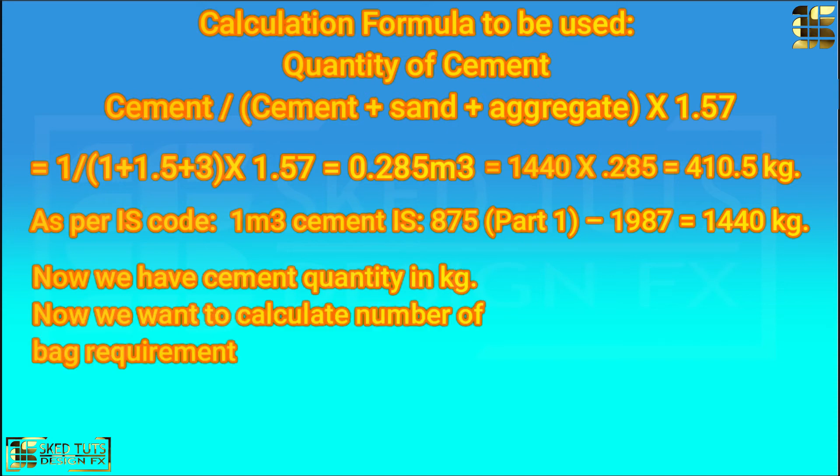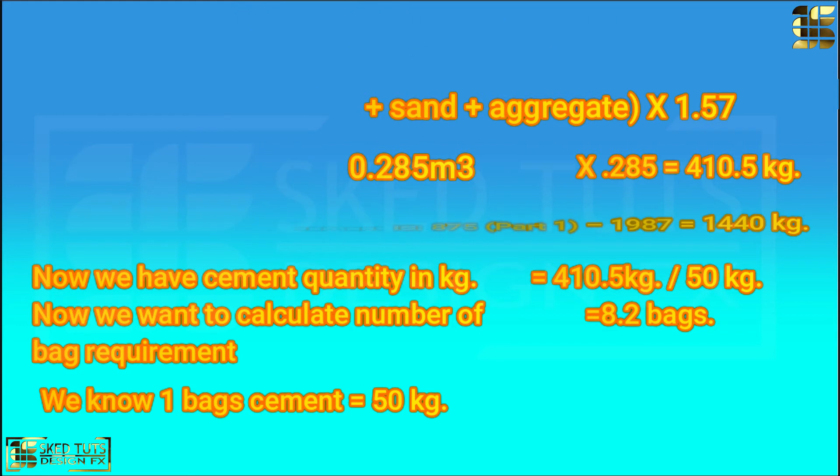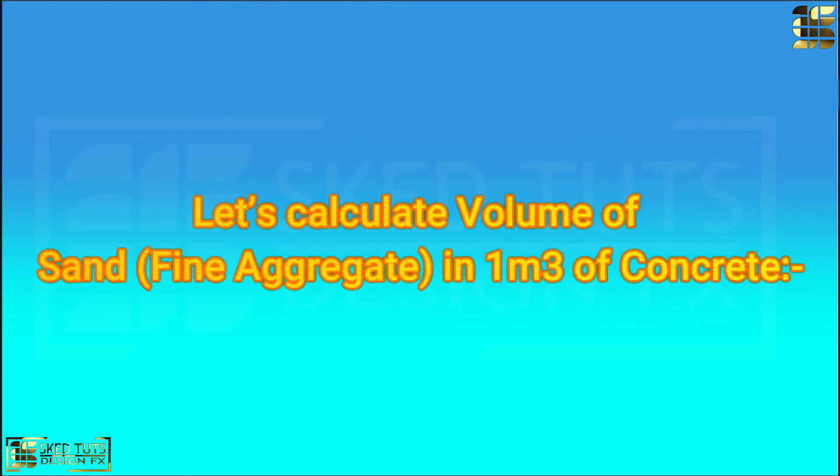Now we have cement quantity in kg. Now we want to calculate number of bag requirement. We know 1 bag cement is 50 kg. So 410.5 divided by 50 kg is equal to 8.2 bags. Now let's calculate volume of sand in 1 cubic meter.